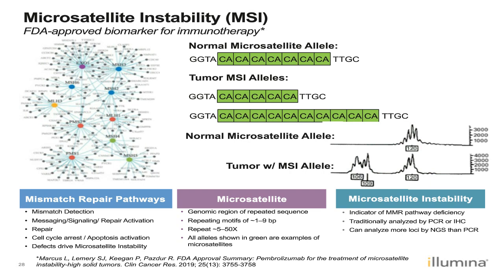Traditional assays for microsatellite instability are normally done through PCR methods, which, due to polymerase slippage, show a range of peaks grouped around the average microsatellite size. If there are problems with the mismatch repair proteins, those peaks begin to drift away from that normal size — in this case, showing loss of microsatellite repeats down to a smaller size. This is important because there is an FDA-approved immunotherapy treatment for microsatellite instability based on defects in the mismatch repair pathways, making the MSI score critical for determining possible therapy options for certain types of cancers.